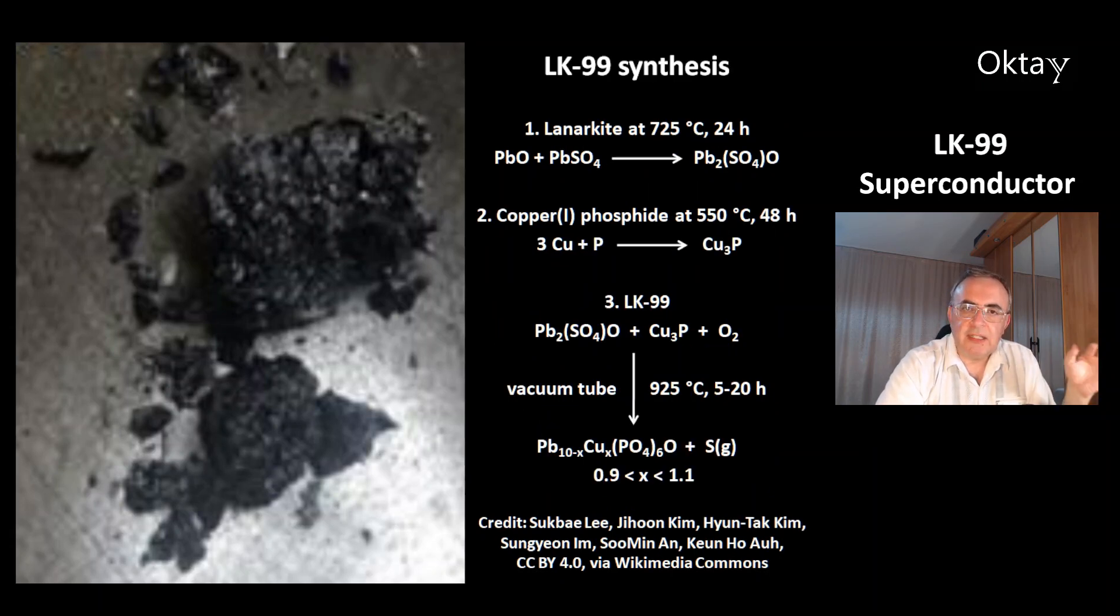This is the synthesis of LK-99. The first step is the synthesis of lanarkite, that's lead sulfate oxide Pb2(SO4)O, from lead oxide PbO and lead sulfate at 725 degrees Celsius.